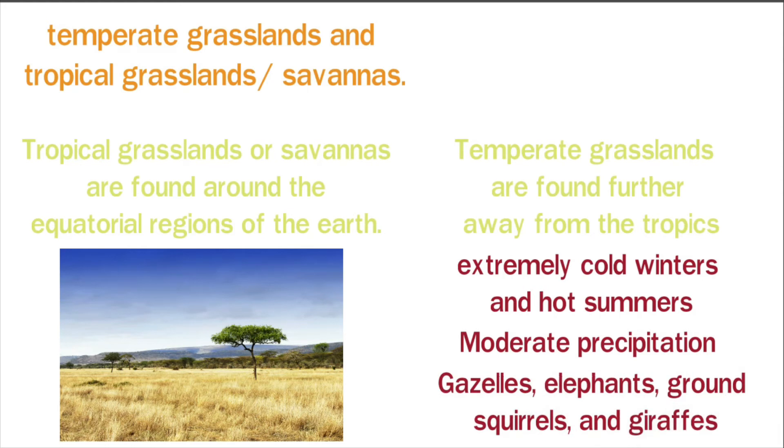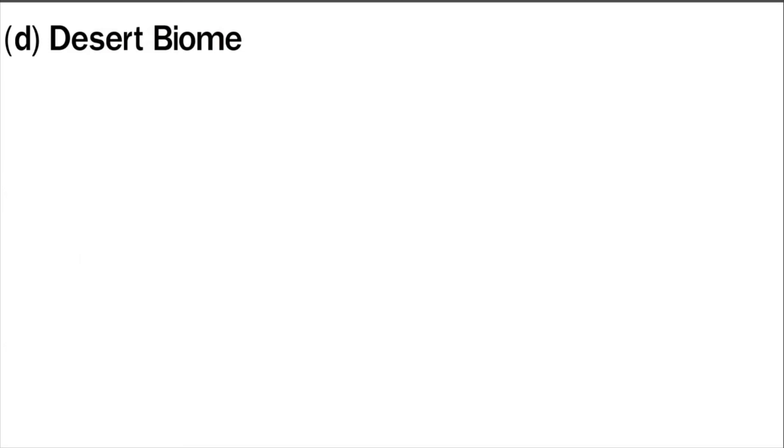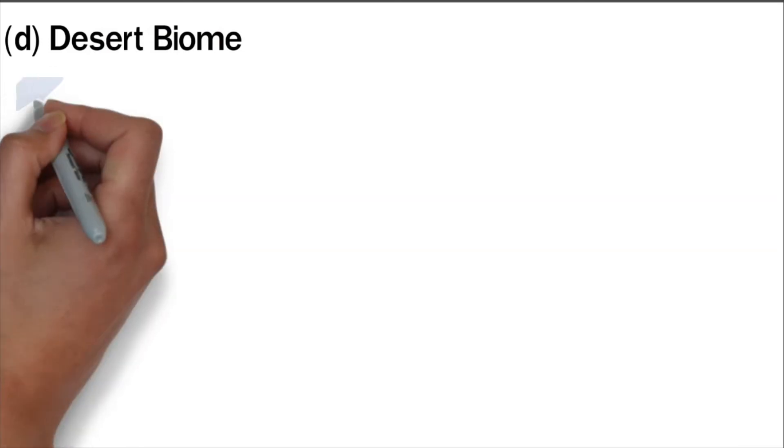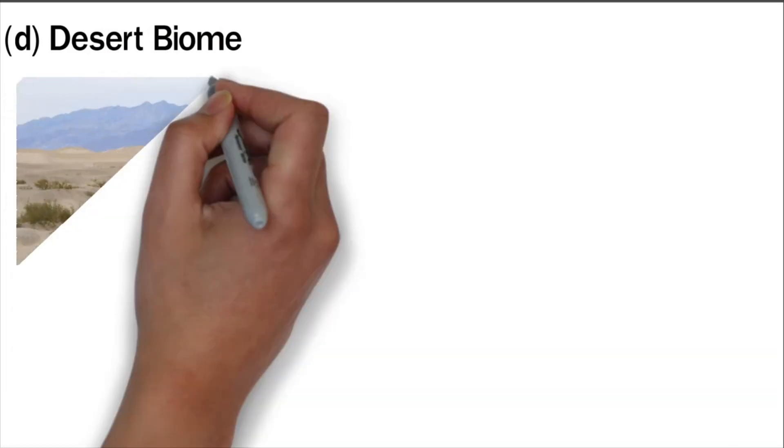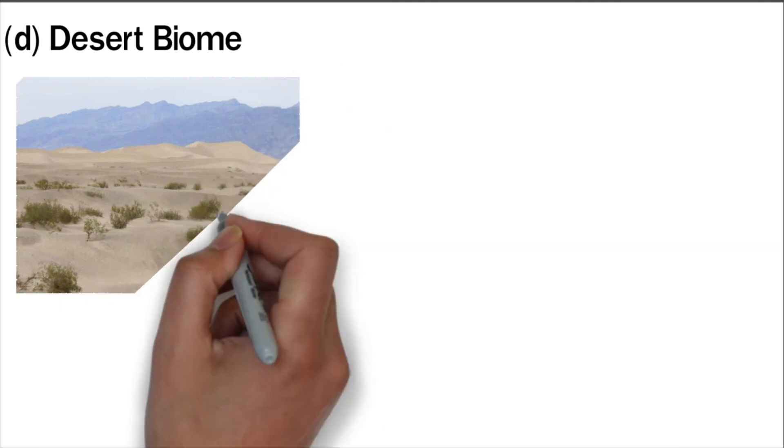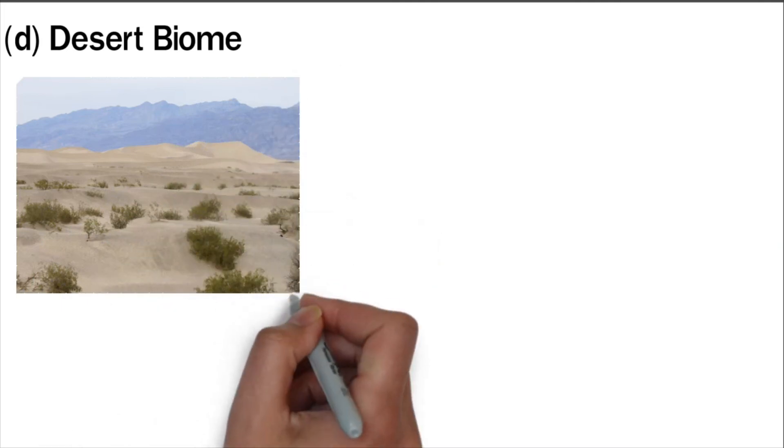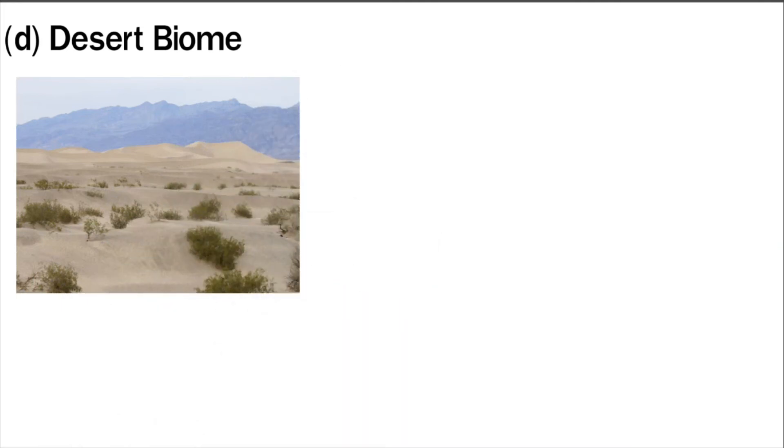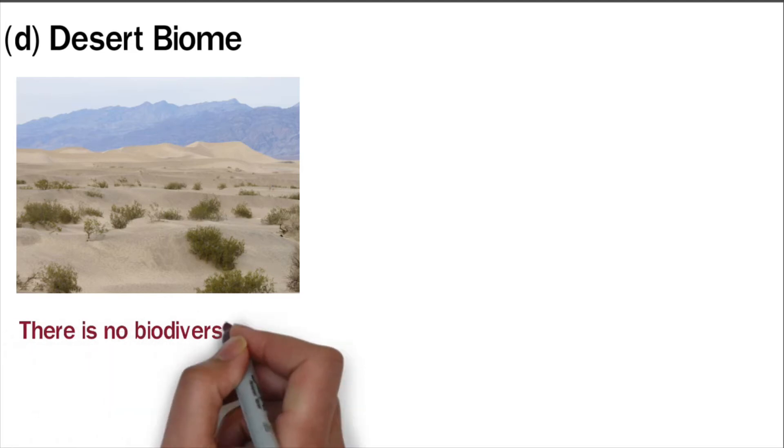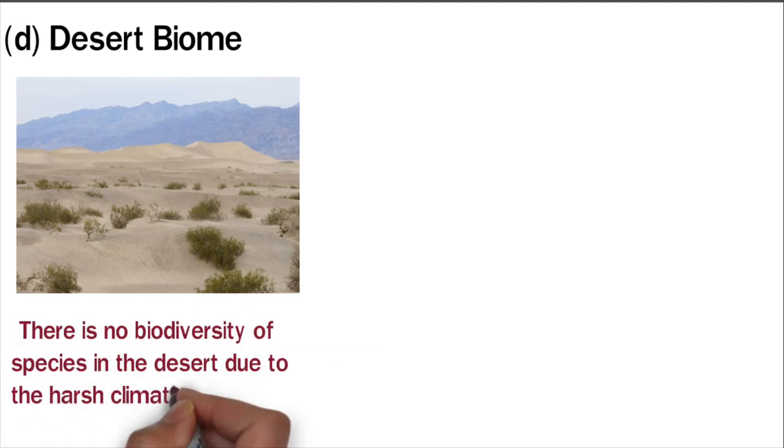Desert biome: Deserts are the driest terrestrial biomes. They receive less than 20 inches of rain per year and are defined by high temperatures. Subtropical deserts are extremely hot during the day and cold during the night. There is low biodiversity of species in the desert due to the harsh climatic conditions.